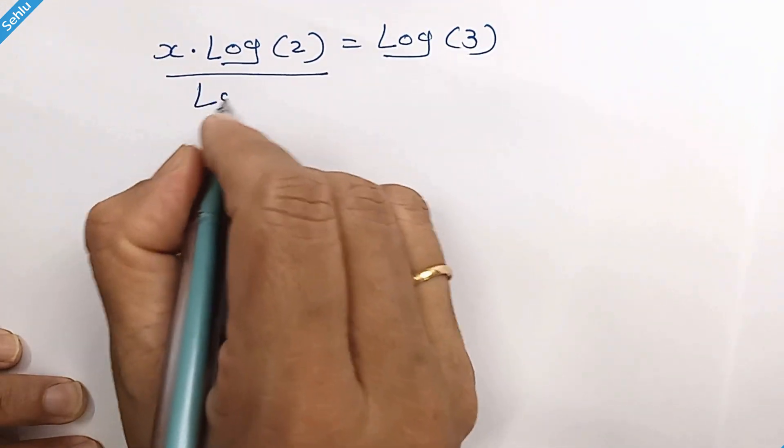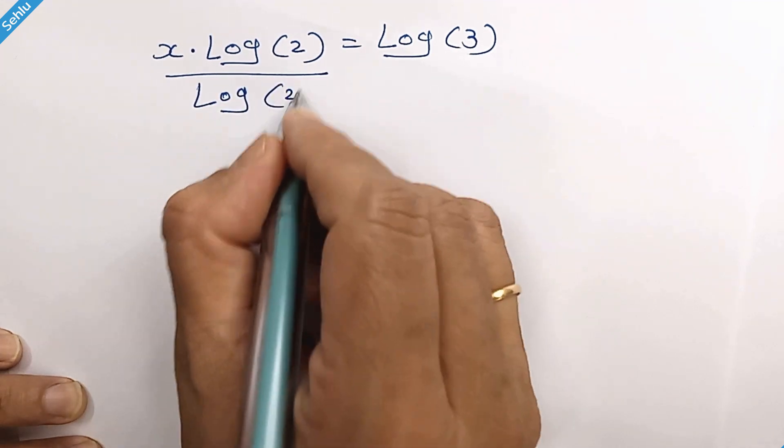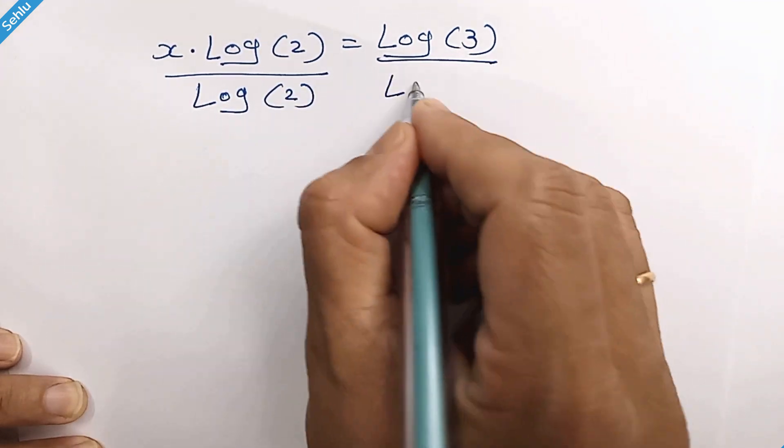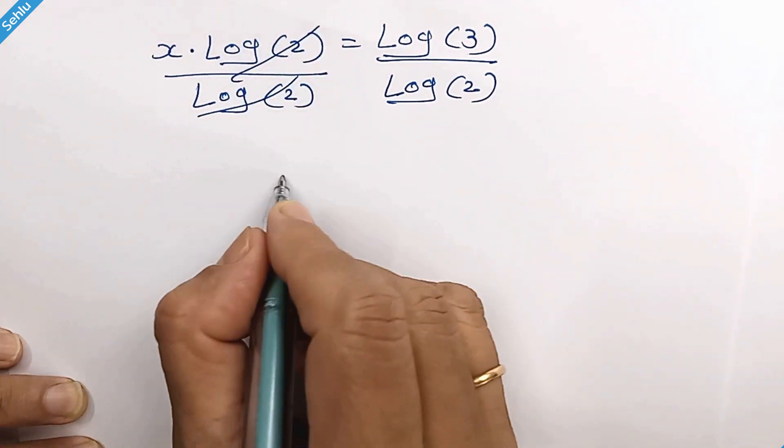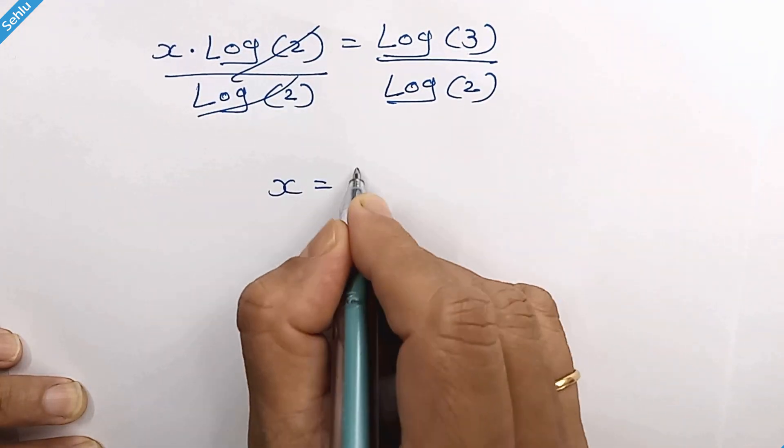Dividing by log of 2 both sides, this log 2 gets cancelled out, so we have x is equal to